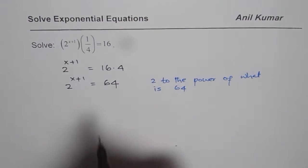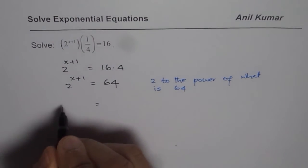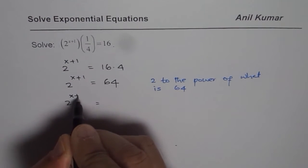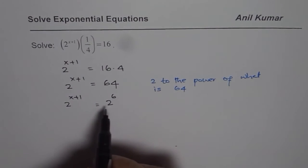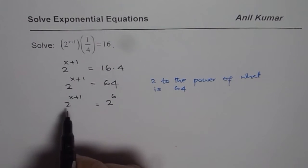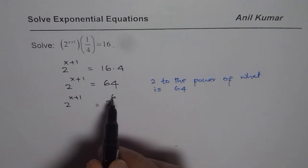2 to the power of 6 is 64. So at this stage, you can write the equation as 2 to the power of x plus 1 equals 2 to the power of 6. Now in exponential equations, if we have the same base, then obviously the exponent should be the same.